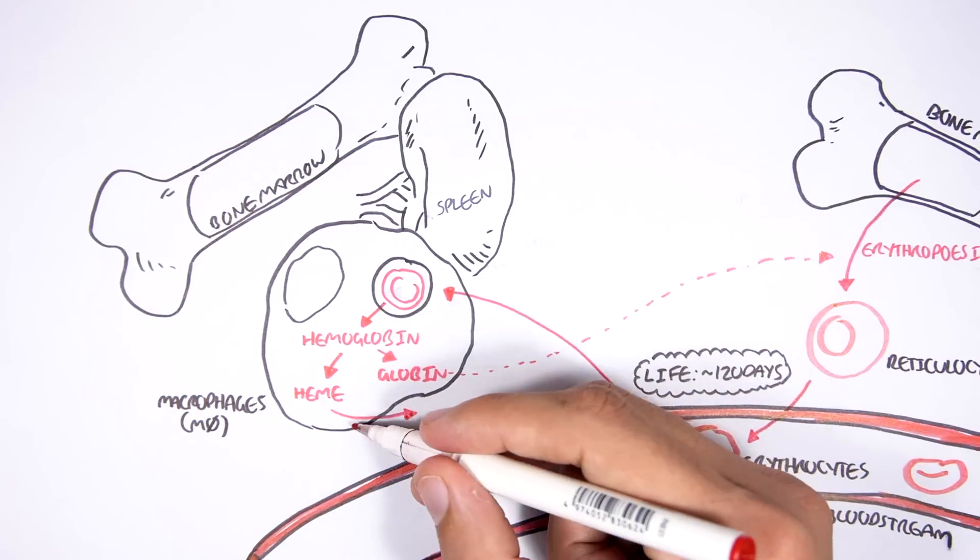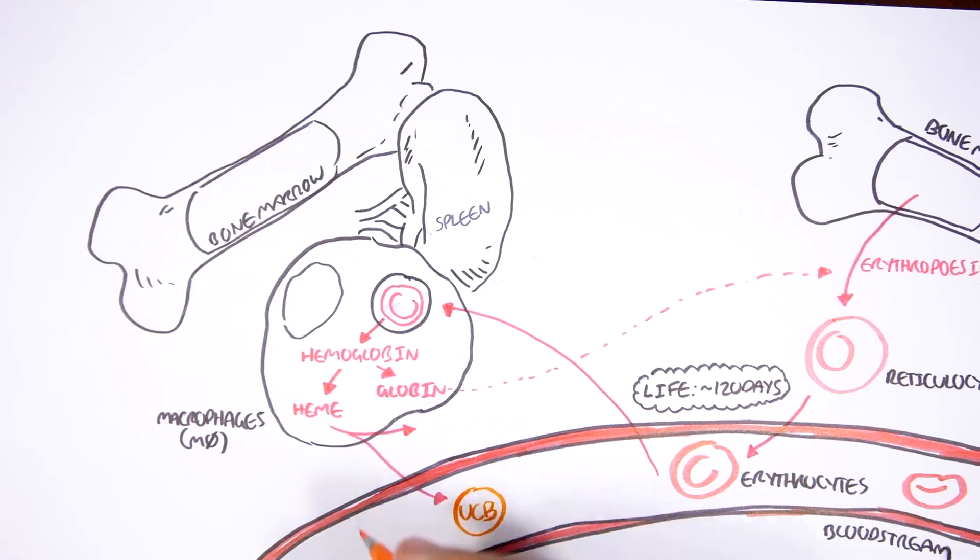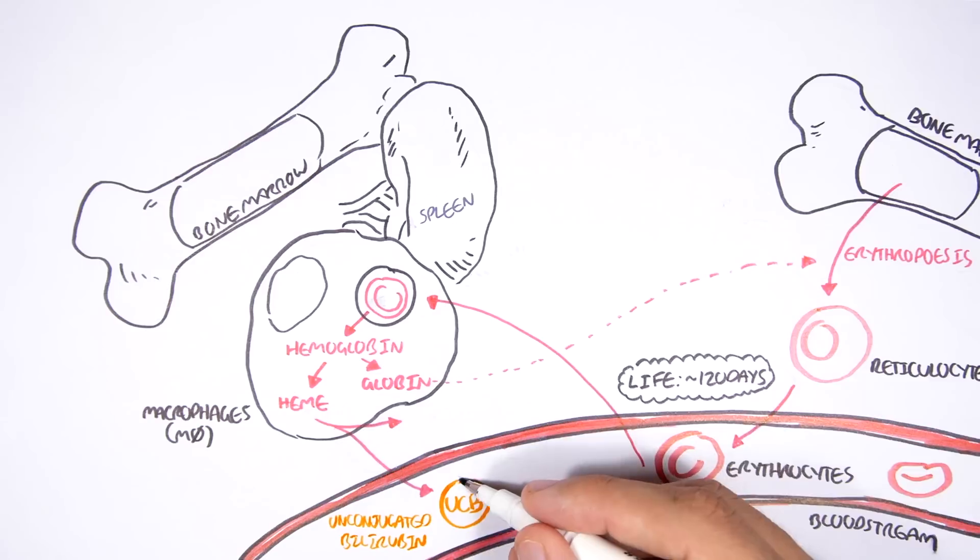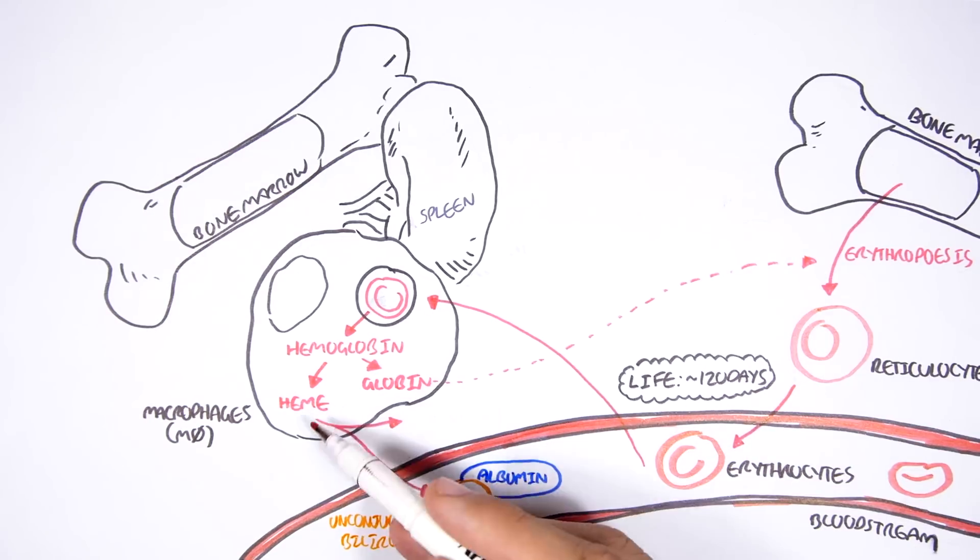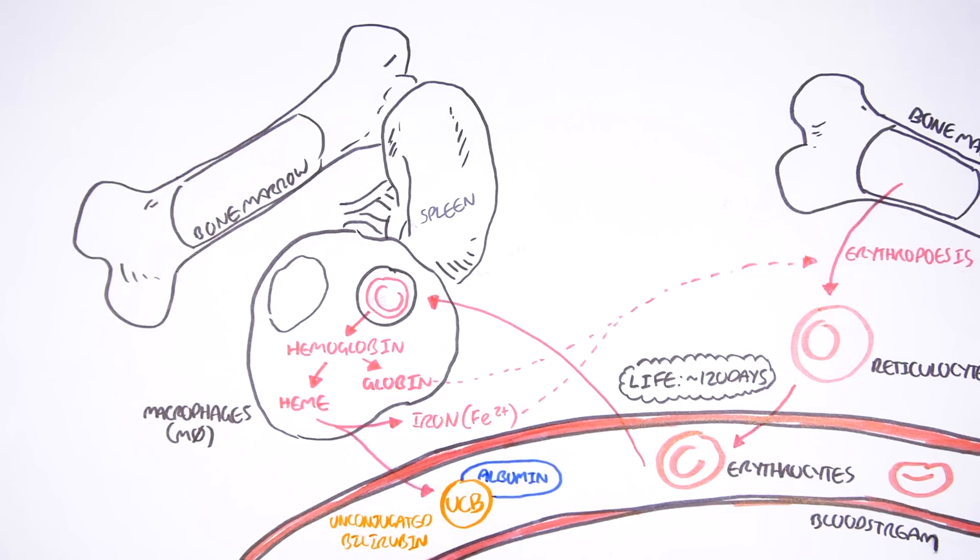The heme, on the other hand, is broken down to two parts. The heme is broken down to unconjugated bilirubin, as well as iron. Now the iron will reenter circulation and be reused for erythropoiesis again.